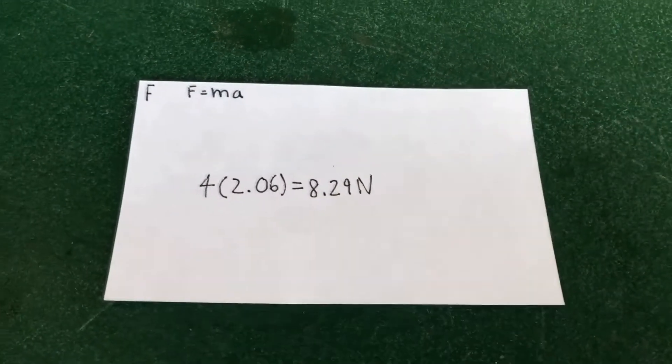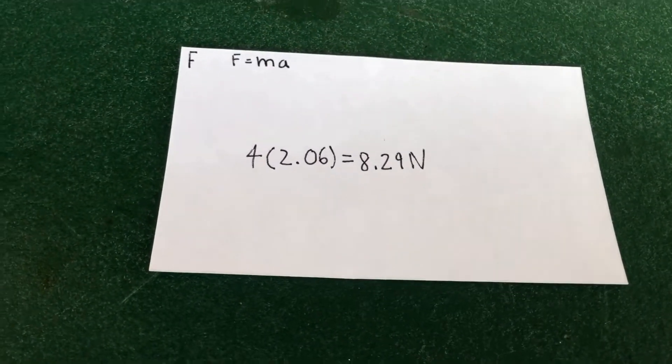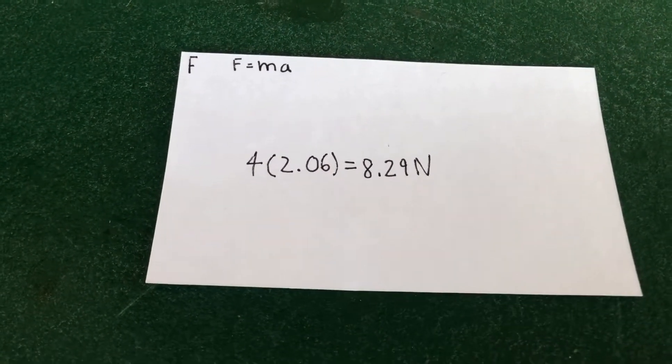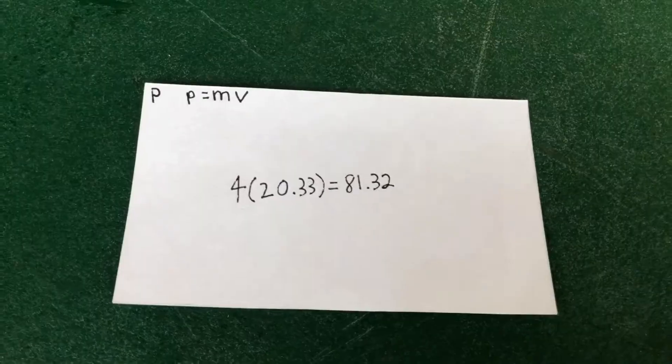The force on the shot put was found using the equation F equals ma. Our mass was 4 kilograms, and our acceleration was 2.06 meters per second squared, which when plugged into the equation gave us a force of 8.29 Newtons.